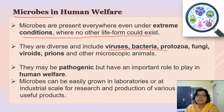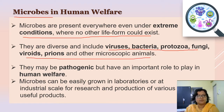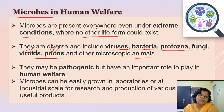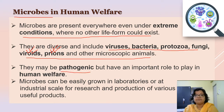Microbes include diverse forms like viruses, bacteria, protozoa, fungi, viroids, prions, and other microscopic animals. Viroids are organisms with only ribonucleic acid, without a protein coat, and are infectious in nature. Prions are proteinaceous infectious bodies. Viruses contain both ribonucleic acid and a protein coat. All these are microorganisms because we cannot see them with the naked eye — we need a microscope. They may be pathogenic, responsible for various diseases, and can also be used for the benefit of mankind.